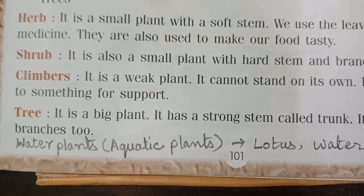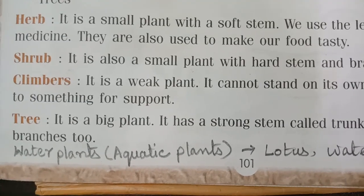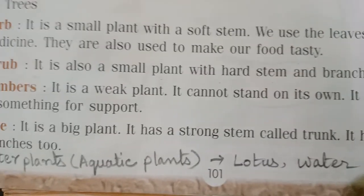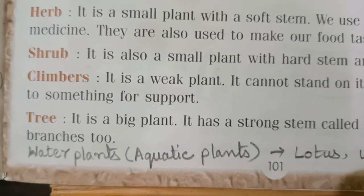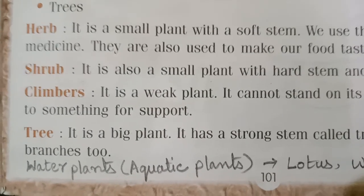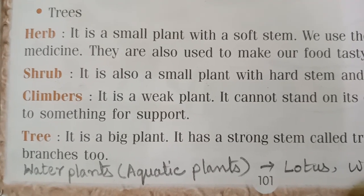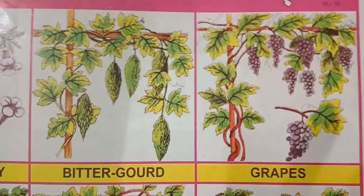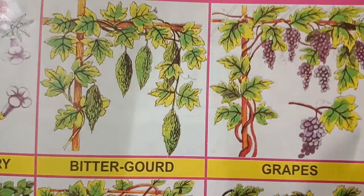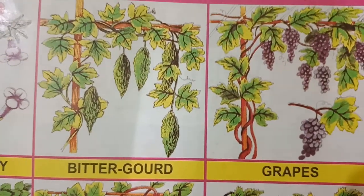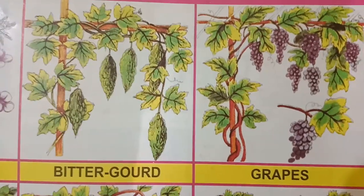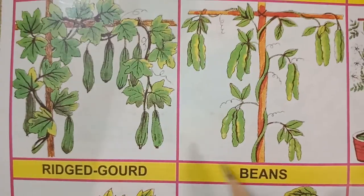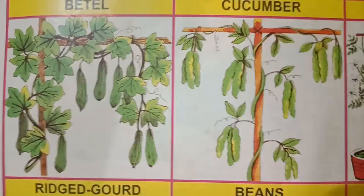Then comes climbers. It is a weak plant. It cannot stand on its own. It climbs onto something for support. That's why it got the name climbers. Like bitter gourd, grapevine — these are climbers. Then your money plant is also a climber. Ridge gourd and beans are all climbers.